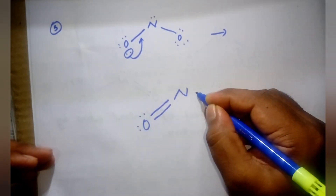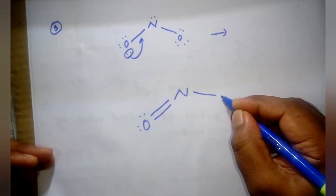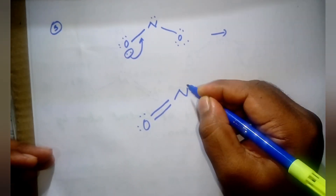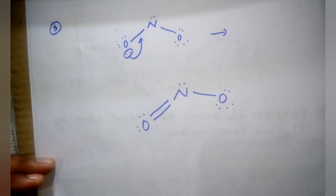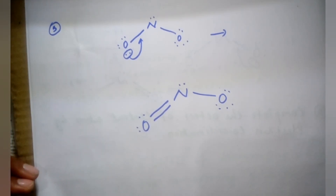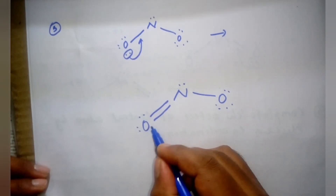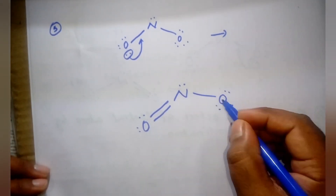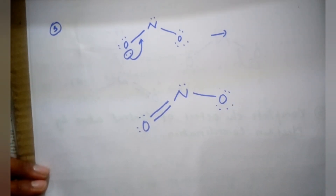Now the structure will be nitrogen double-bonded to one oxygen and single-bonded to the other. This oxygen has one two three four five six seven eight electrons — octet complete. This is the final structure of NO2 minus. Finally, we have to assign the formal charge of each atom: this oxygen, this nitrogen, and the other oxygen.